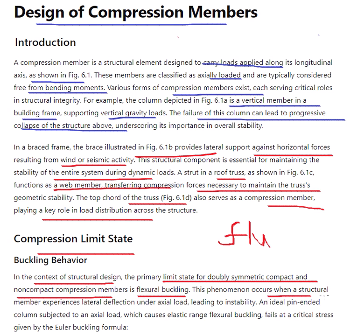This phenomenon occurs when a structural member experiences lateral deflection under axial loading, leading to instability. An ideal pin-ended column subject to axial load, which causes elastic range flexural buckling, fails at the critical stress given by the Euler buckling formula — this is an important point to consider.